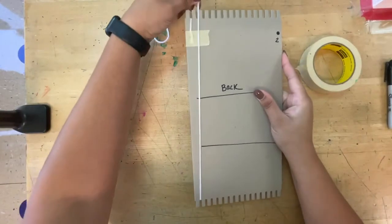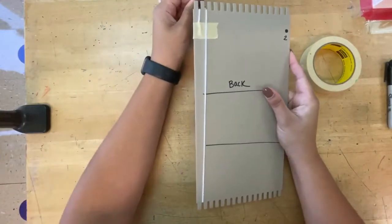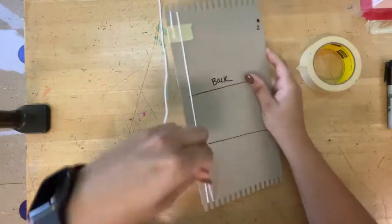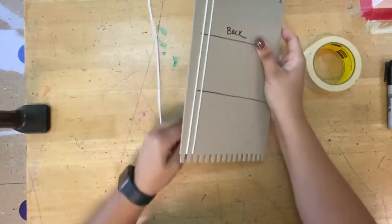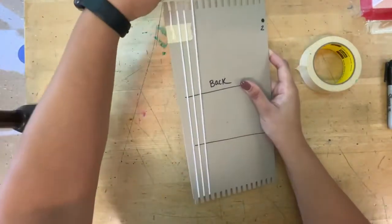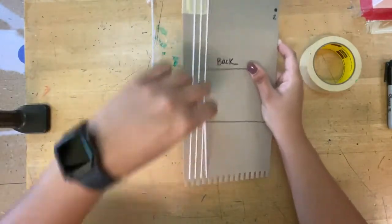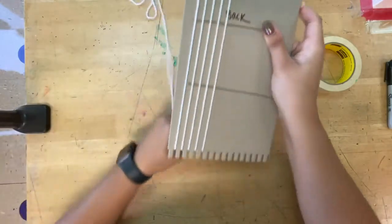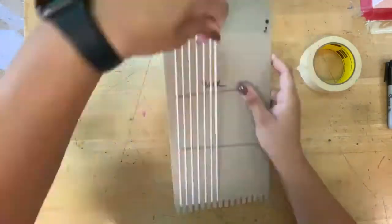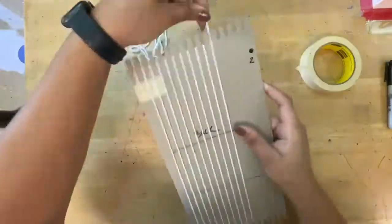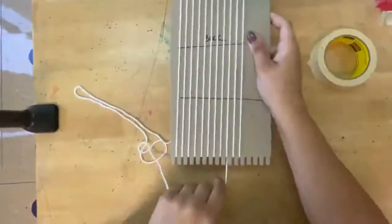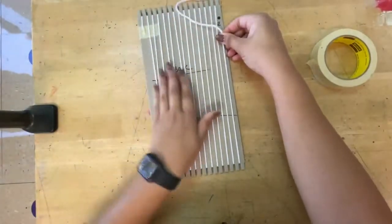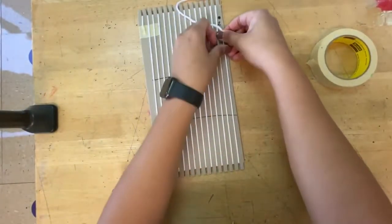Then back up to the top, going to notch two, wrapping around. Going to the next notch every single time. And keep going until your entire loom is filled up. You can see how I'm holding my strings pretty tight as I go.